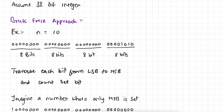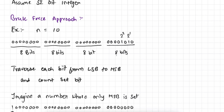Here are 8 bits that are all unset, here also 8 bits that are unset, here also 8 bits that are unset, and here are 8 bits where only 2 bits are set. Now how would you calculate the number of set bits in this binary representation? If you follow the brute force approach, you have to traverse each bit from the least significant bit to the most significant bit and count the set bits — as simple as that. You have to traverse from here till here and simply count the number of bits.